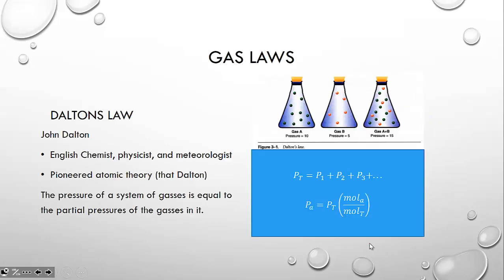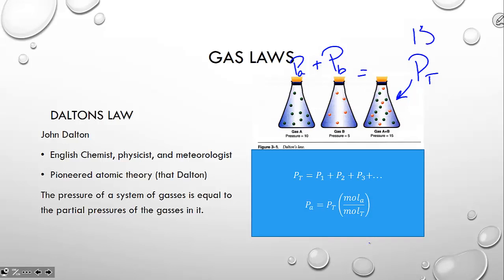The first person we're going to talk about who noticed a principle of gases is John Dalton — the same John Dalton who gave us the atomic theory back in Unit 1. Dalton noted that when you have a mixture of gases, that gas's total pressure is equal to the sum of its parts. So if one gas has a partial pressure of 5 and another has a partial pressure of 10, the total pressure within a container is 15.